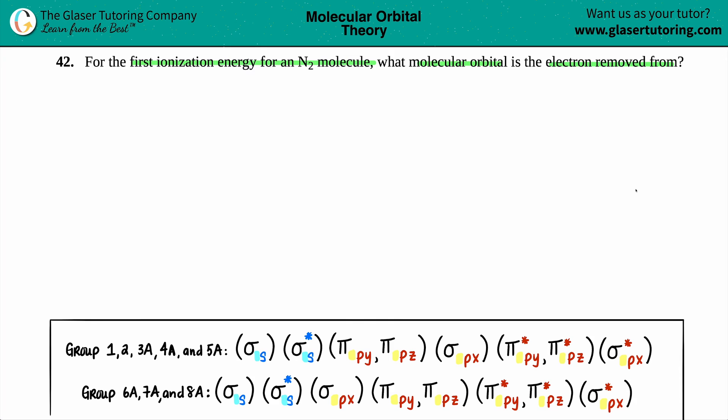So first ionization energy for N₂ molecule. Now, whenever they talk about the first ionization energy, an ionization energy is the energy needed to remove, not gain. We're always removing an electron. So that's why they go together. They're talking about electron being removed here and ionization energy because ionization energy is always the energy needed to get rid of one electron. And if they're calling it a first ionization energy, first means that you're removing the first electron.